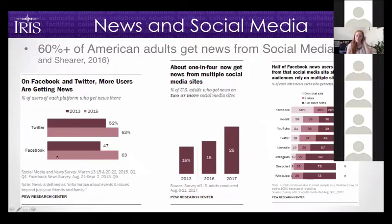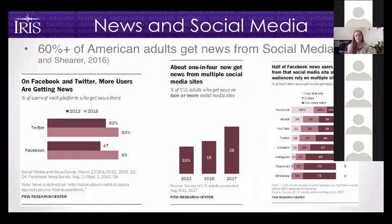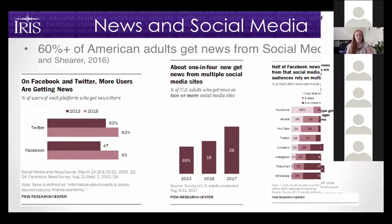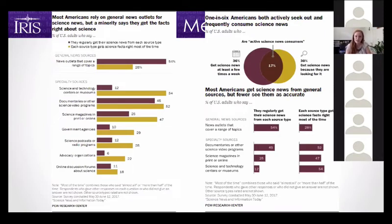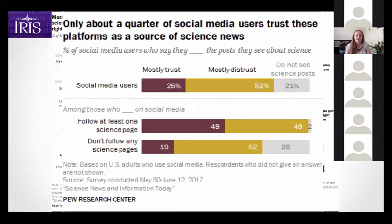Data from the Pew Research Center shows about 63% of American adults get some amount of their news from Twitter and Facebook. About one in four get news from multiple social media sites. People who use Facebook tend to use only Facebook for news, so science communicators cannot dismiss it — we need to be working on talking to people on Facebook. Most Americans still rely on general news outlets for science news, but most don't think those outlets get the facts right.